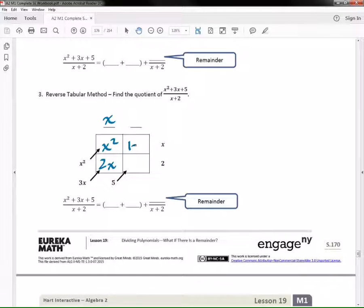I would need a 1x, right? Okay, so what times x gives me 1x? Just 1. And then I have 1 times 2. What do I get? So I put a 2 right here. But wait a second, that doesn't match the 5.